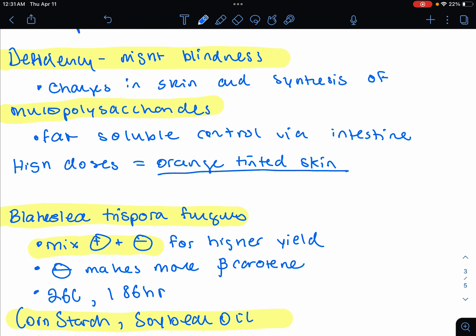Deficiency in beta-carotene could result in night blindness. You could also have changes in the skin and the synthesis of mucopolysaccharides. It's fat-soluble, and absorption of beta-carotene is controlled through the intestine. High doses of supplements with beta-carotene will actually result in orange skin. This is a real phenomenon.